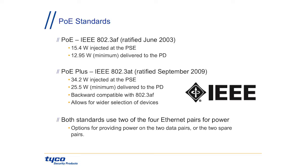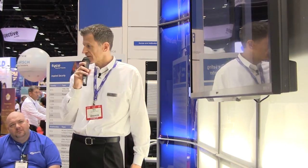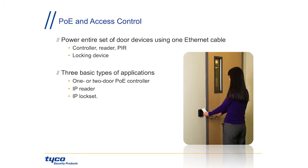Both standards use two of the four Ethernet pairs. If you look at a CAT5 cable, there are four twisted pairs. Two pairs handle the power — in some cases separate pairs, other cases the same pair. The standard accommodates both and negotiates the proper power to the device. The main premise for access control is to power the whole door with one CAT5 cable, rather than having a separate lock power supply — that's just not very efficient.